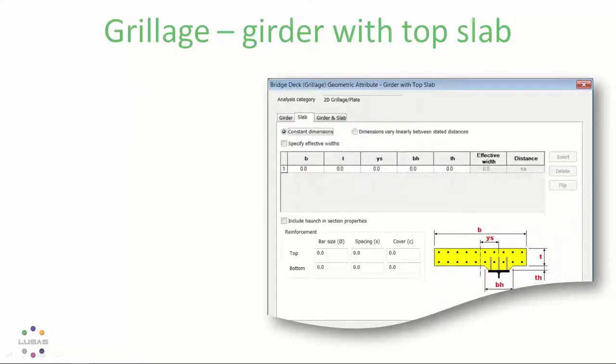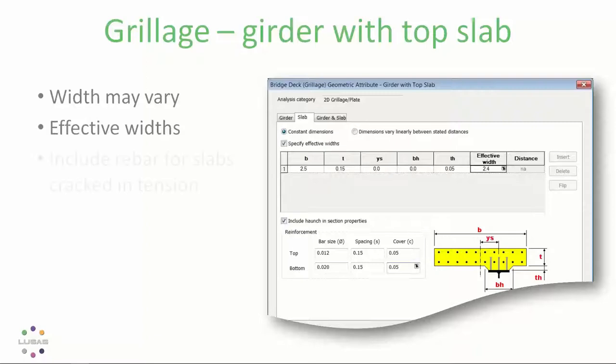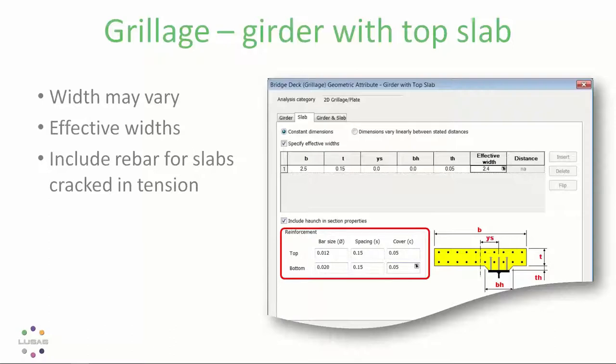For the slab of the composite section, well, the width may vary along the assigned length as when girders are splayed. And you might enter effective widths to account for shear lag, which can also vary across the span. And for slabs that are cracked, which are cracked in tension or reinforcement details may also be added.